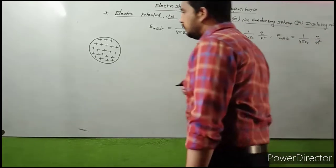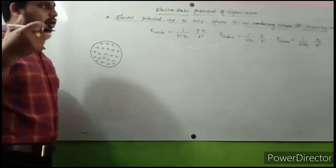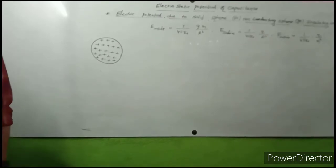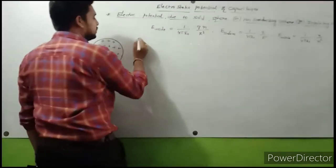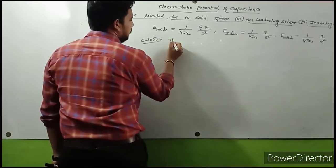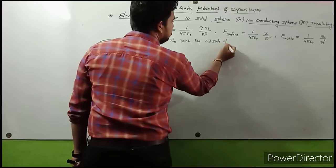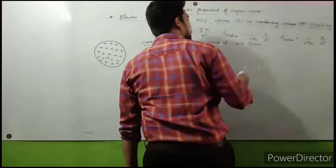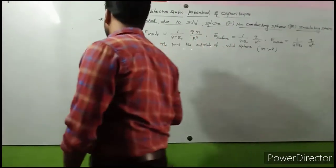Based upon these electric field formulas, we are finding the potential inside, potential on the surface, and potential outside. Case 1: the point lies outside of the solid sphere, meaning small r is greater than capital R, where R is the radius of the solid sphere.